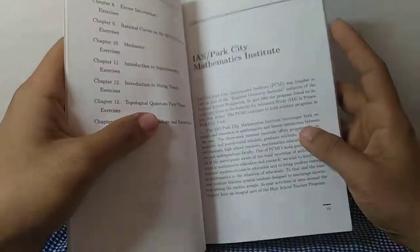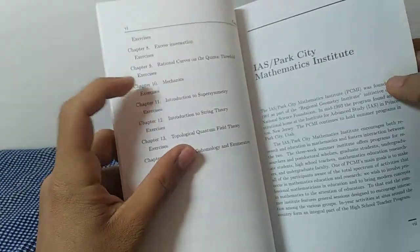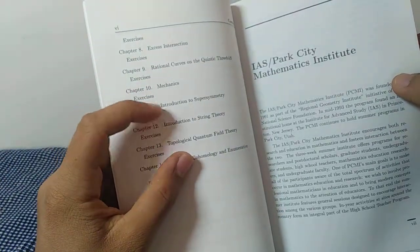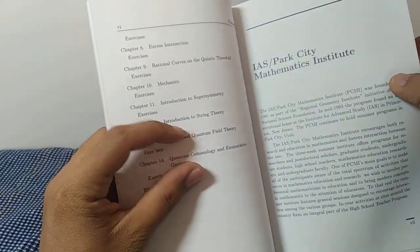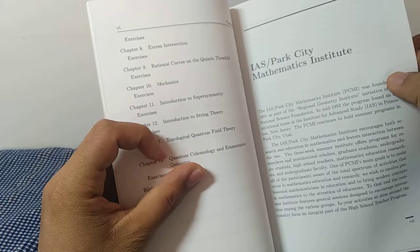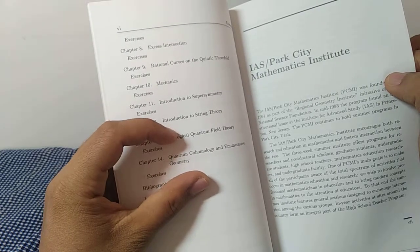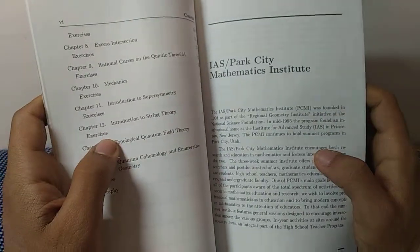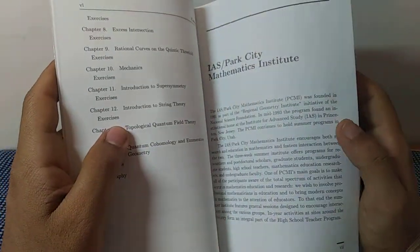Let me just go through the introduction. There's also some more chapters about mechanics, supersymmetry, string theory, topological quantum field theory, quantum cohomology, enumerative geometry and so on and so forth. There is quite a lot of things in this book.